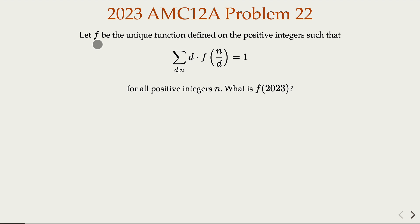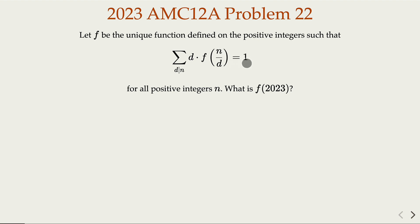F is what is called an arithmetic function — a unique function defined on positive integers — satisfying this equality. The summation sign is over all positive divisors D, and the sum of D times F of N over D equals 1.